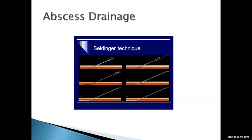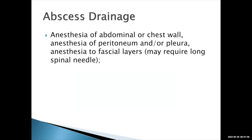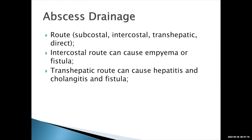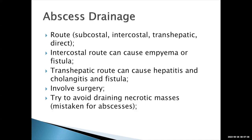Abscess drainages can also be performed. There are two techniques: the Seldinger technique, which involves placing a sheath into the collection, inserting a wire, serially dilating the track with dilators, and then placing the drain over it; and the direct technique. There are different routes to consider, as certain routes carry higher risk of seeding — for example, an intercostal route can seed the pleura causing an empyema, and a transhepatic approach can seed the liver. Sometimes you should involve surgery prior to draining, and try to avoid draining necrotic masses.